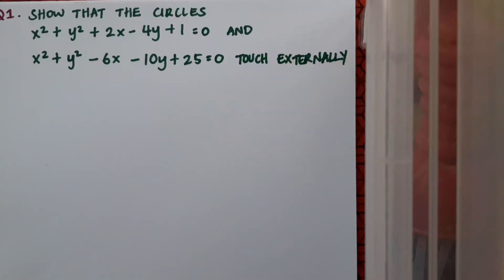Okay so here's a question for you. Show the circles x squared plus y squared plus 2x minus 4y plus 1 equals 0 and x squared plus y squared minus 6x minus 10y plus 25 equals 0 touch externally. Pause the video here, do the question and then play and see if you're right.